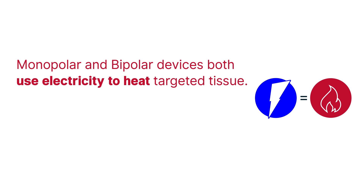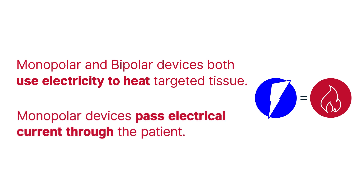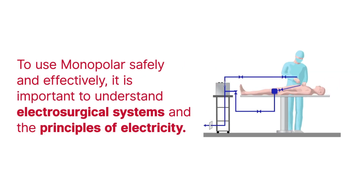Monopolar and bipolar devices both use electricity to heat targeted tissue. Whereas bipolar devices pass electricity only between the jaws of the device, monopolar devices pass current through the patient. To use monopolar safely and effectively to heat, coagulate, and cut tissue, it is important to understand both electrosurgical systems and the principles of electricity.